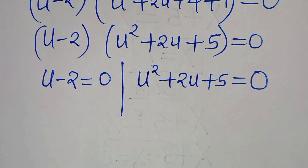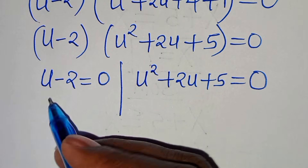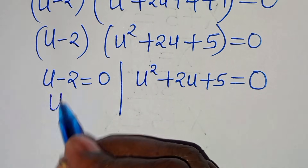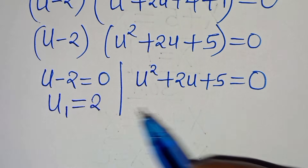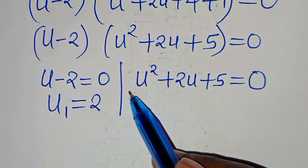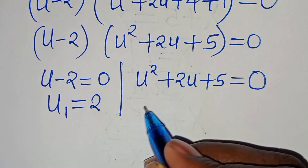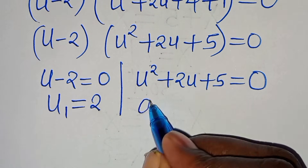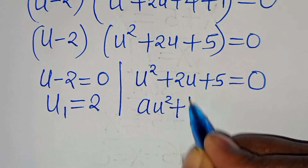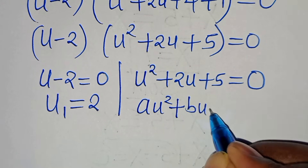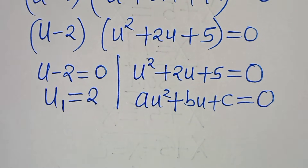From the first part we have u₁ equals 2. The second part is a quadratic equation in the form au squared plus bu plus c equals 0.